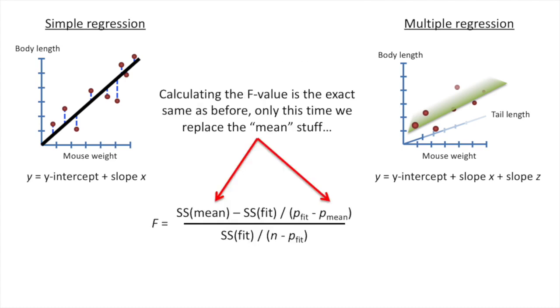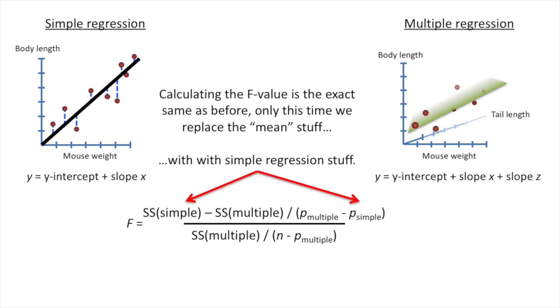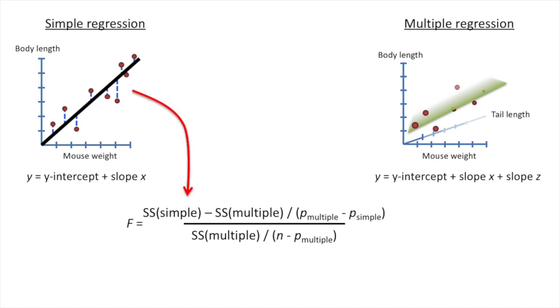Calculating the f-value is the exact same as before, only this time we replace the mean stuff with the simple regression stuff. So instead of plugging in the sums of squares around the mean, we plug in the sums of squares around the simple regression. And instead of plugging in p-mean, we plug in p-simple, which equals the number of parameters in the simple regression. That's two. And then we plug in the sums of squares for the multiple regression. And we plug in the number of parameters in our multiple regression equation.